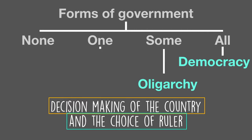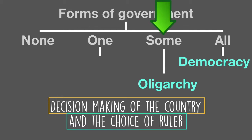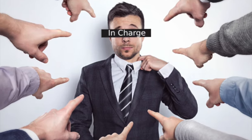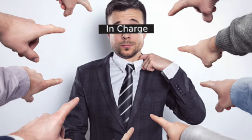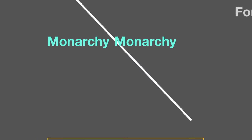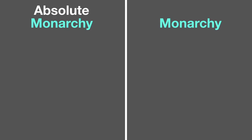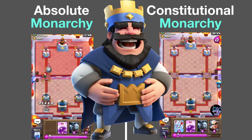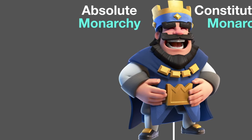There are countries where not everyone is in charge and not a group, but one single person. We can point to that one person and say they make all the decisions. These can be monarchies, dictatorships, or autocracies. Starting with monarchies, there are two types: absolute monarchies and constitutional monarchies. When we say monarch, we mean a king.